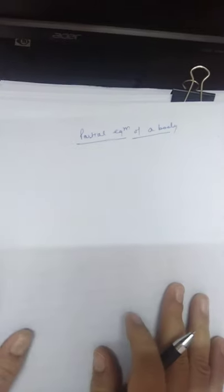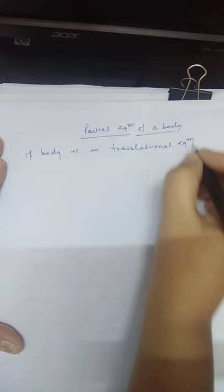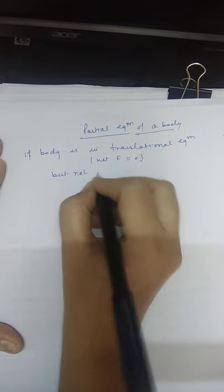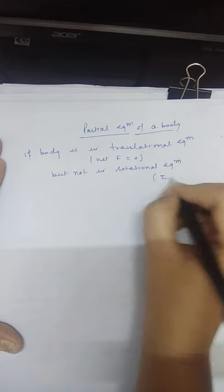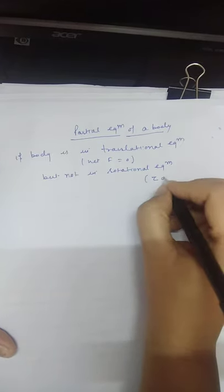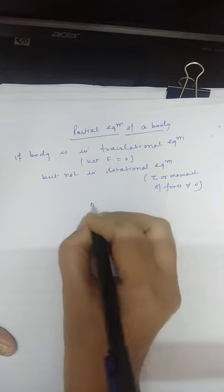A body is said to be in partial equilibrium if it is in translational equilibrium — meaning the net force acting on it is zero — but not in rotational equilibrium, meaning the net torque or moment of force is not equal to zero.